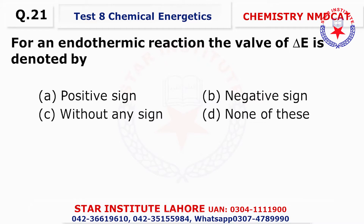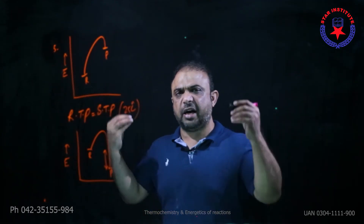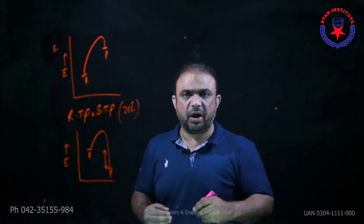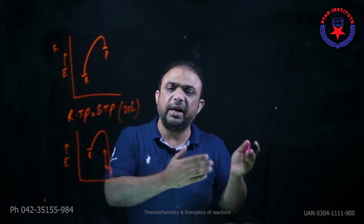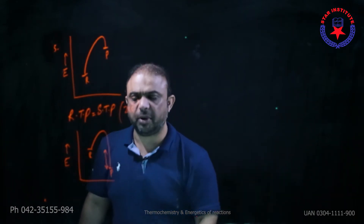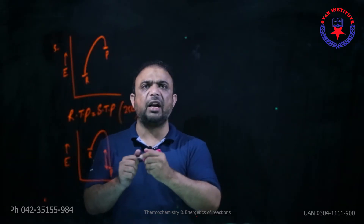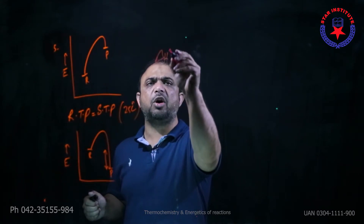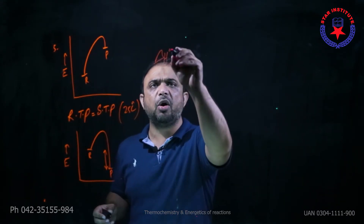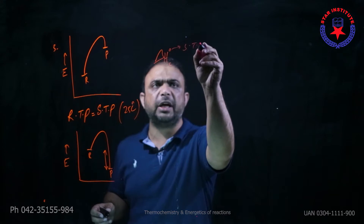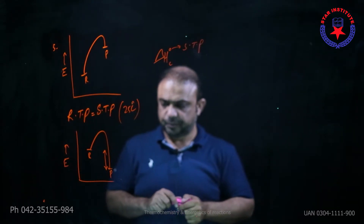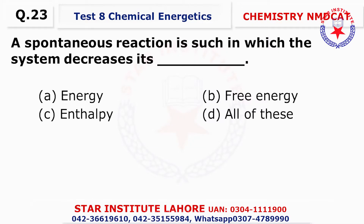Question number twenty-one: For an endothermic reaction, the value of delta E is positive — if the reaction is endothermic, both delta H and delta E are positive. If exothermic, both carry a negative sign. Question number twenty-two: The correct symbol for standard enthalpy of combustion — whenever 'standard' is asked, write delta H° with subscript C. The '°' (not) indicates STP conditions.